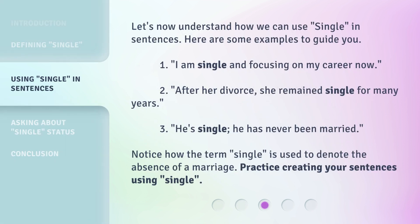Let's now understand how we can use Single in sentences. Here are some examples to guide you. 1. I am Single and focusing on my career now. 2. After her divorce, she remained Single for many years. 3. He's Single. He has never been married. Notice how the term Single is used to denote the absence of a marriage. Practice creating your own sentences using Single.